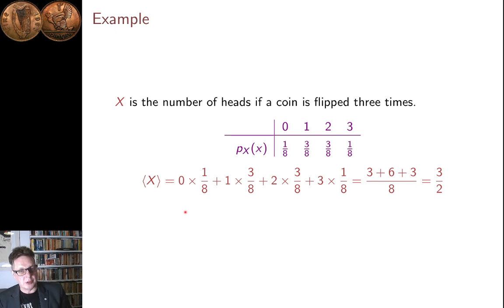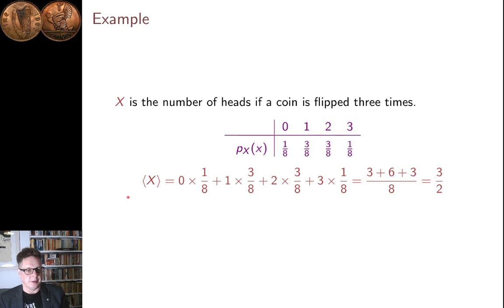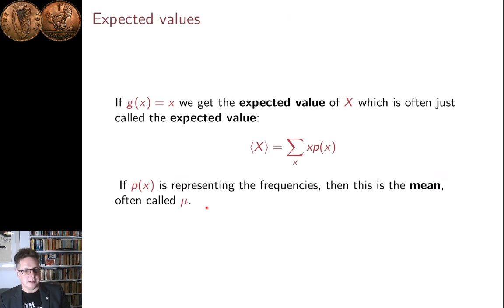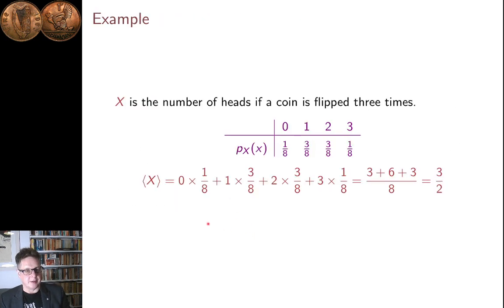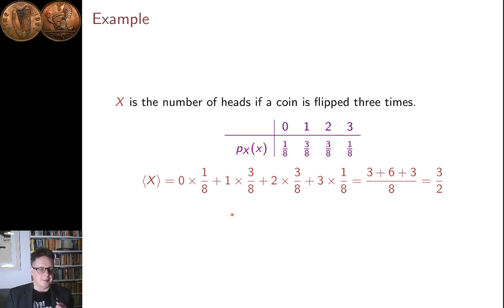You notice that you couldn't do arithmetic with the outcome itself — you can't add H,H,H to H,H,T and divide by two. But you can do arithmetic where you're multiplying zero by one eighth and adding it to one by three eighths and so on. Expanding out the sum, we get three over two, which lies in the middle — which you could have guessed because the whole thing is symmetric. And so that's the expected value of X for that probability distribution.